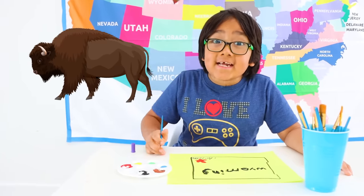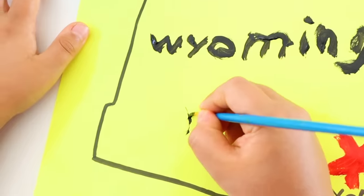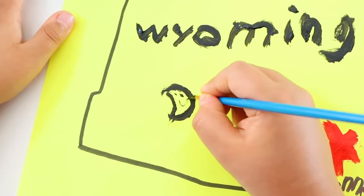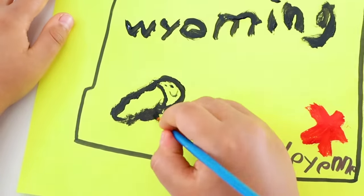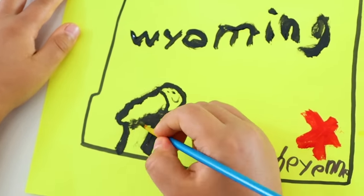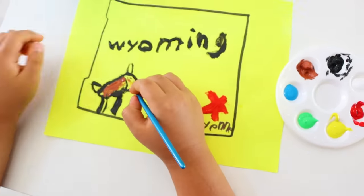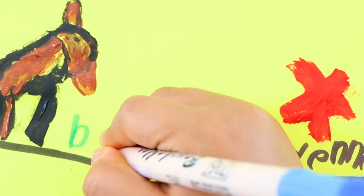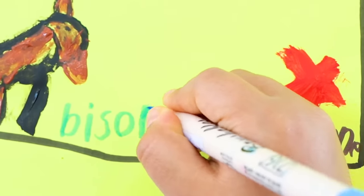Wyoming's state animal is a bison. I'm going to draw a bison — maybe the head and the body separate like this, and the head goes here. And the happy face, with the body and some legs, and then the tail. Now I'm going to color it in with brown. Now I'm going to name the bison: B-I-S-O-N.